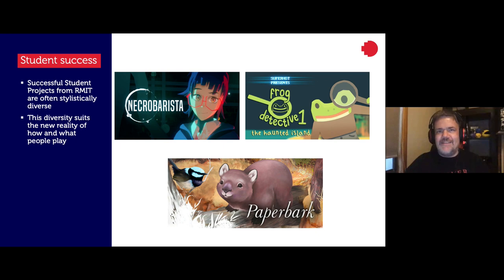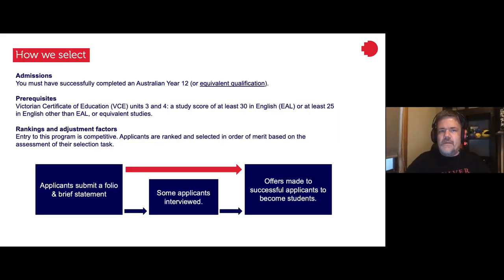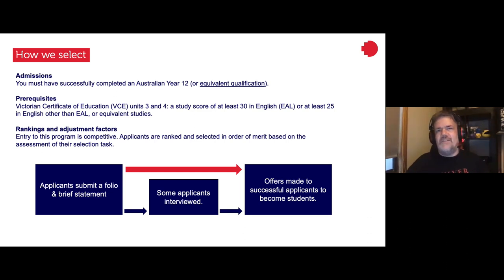For selection into games, there are some basic requirements: a study score of at least 30 or equivalent. The main requirement is a folio entry — a very general and relaxed folio — along with a brief statement. Once we receive folios, some applicants will be interviewed and some will be offered a place straight away. That's not to say the best get in straight away — we love interviewing students, asking what they want to make. We take the opportunity to talk to as many students as possible because finding out what games you like and want to make helps us understand what mix of students we can pull together.